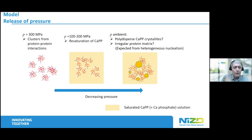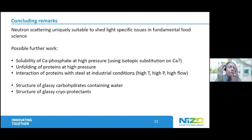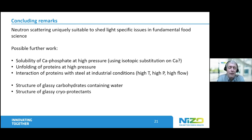That brings me to my conclusions. You probably agree that neutron scattering is uniquely suitable to shed light on specific issues of fundamental food science. Some of these issues are really quite urgent — especially what happens in a spraying nozzle, and also what happens in the narrow confinement of a high heat treatment line during UHT treatment. What happens precisely when does the fouling start, where does it start? Can you correlate the starting points of fouling with certain geometries or defects in the stainless steel?